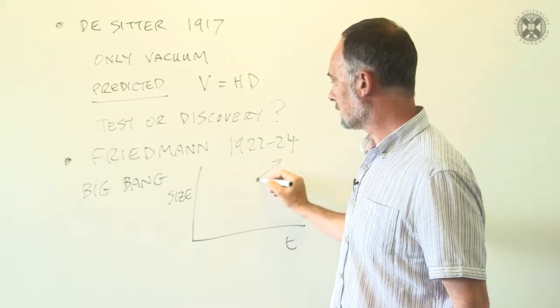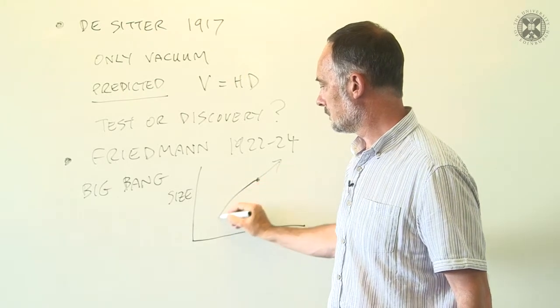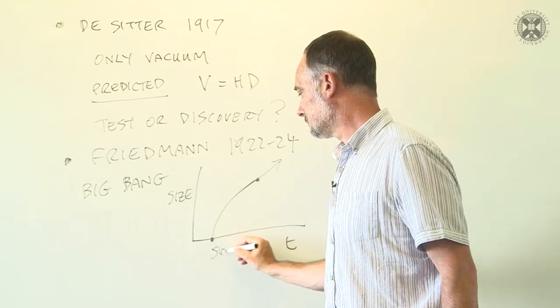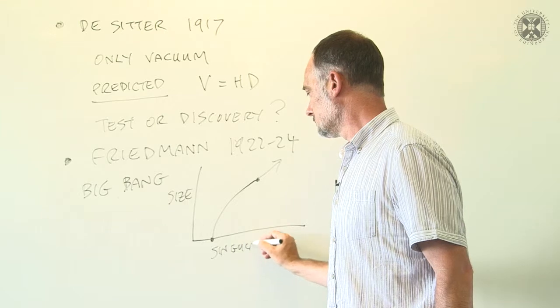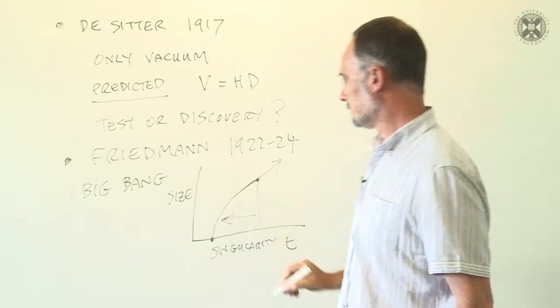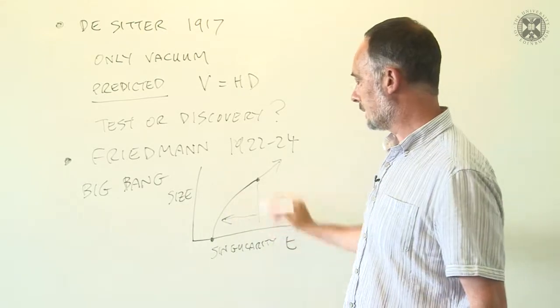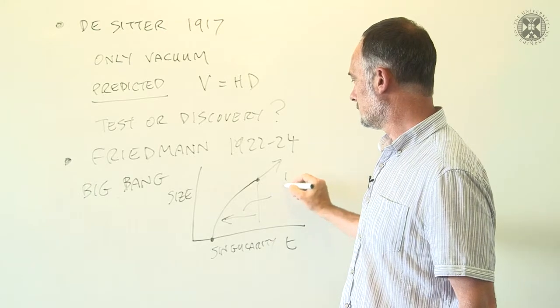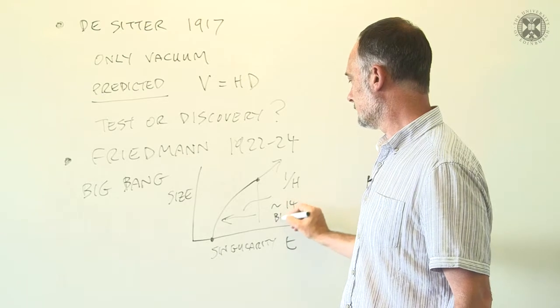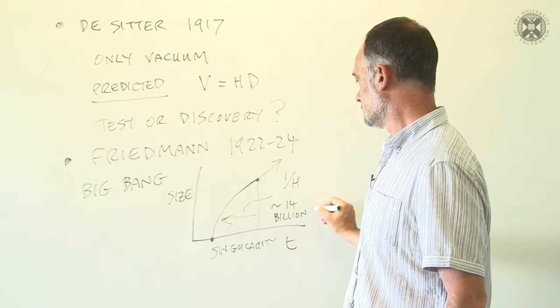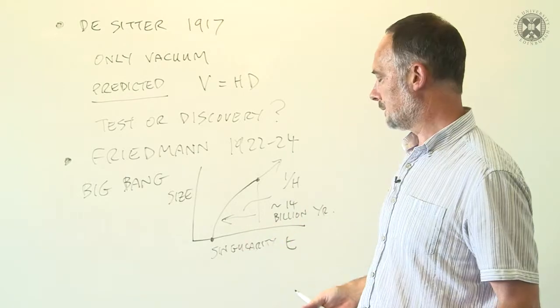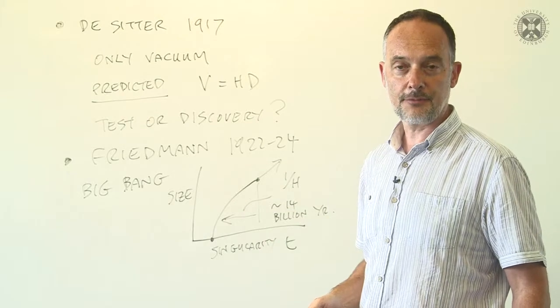Solving the equations given him by Einstein, Friedman showed that in the past, this would have emerged from a singularity. And the time between the singularity and today is about one over Hubble's constant, which today is 14 billion years. So Einstein's dynamics had given us the strange conclusion that the universe was only a finite time.